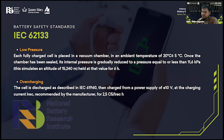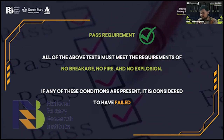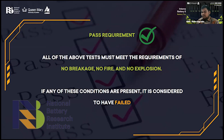There is also an overcharging test: the cell is discharged as described in another standard IEC 61960, and then charged from a power supply with 10 volts at the charging current recommended by the manufacturer. We can use a 1C rate or half C rate — it depends on the datasheet from the manufacturer. All the tests will be declared passed when they meet the requirement: no breakage, no fire, and no explosions. If any of these conditions are present, it is considered a failed test and you need to retest again from the first one.